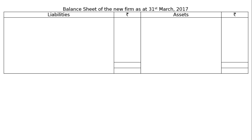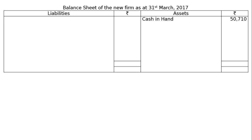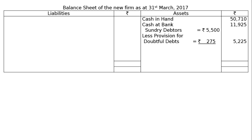Balance sheet of the new firm as at 31st, 2017. On the assets side: cash in hand Rs. 710 + Rs. 50,000 = Rs. 50,710; bank Rs. 11,925; sundry debtors Rs. 5,500 less provision for doubtful debts (5%) Rs. 275 = Rs. 5,225; stock Rs. 18,000 − Rs. 1,800 = Rs. 16,200; furniture Rs. 4,400 − Rs. 440 = Rs. 3,960; building Rs. 40,000 + Rs. 15,000 = Rs. 45,000.